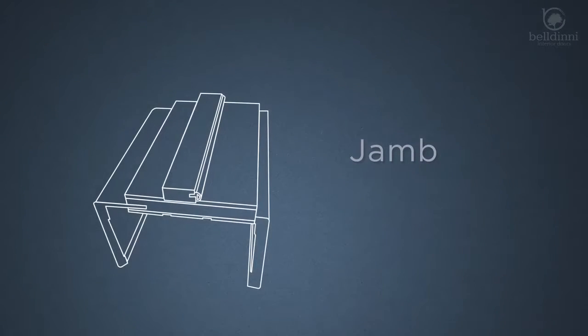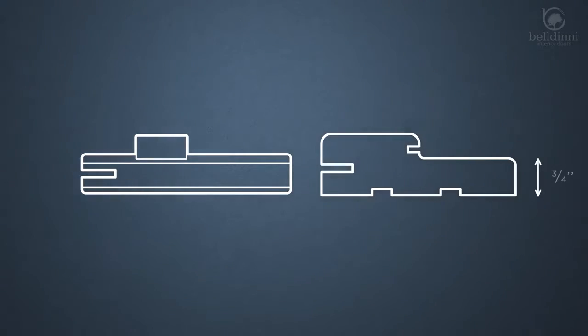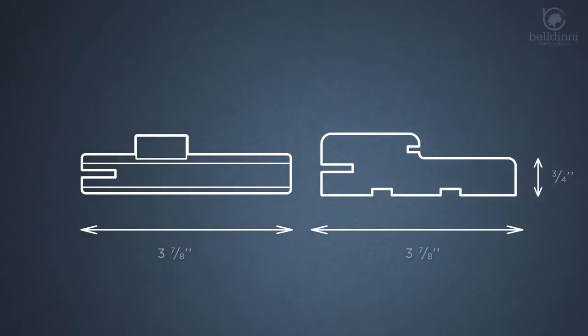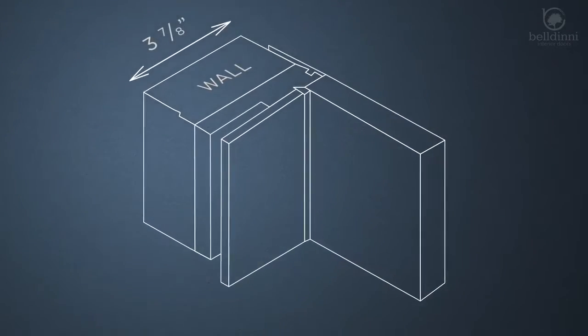It is important to differentiate the width and the thickness of a frame. Most Beldini frames are three-quarters inch thick and three and seven-eighths wide. They can easily cover the wall thickness of up to three and seven-eighths without applying additional tools.